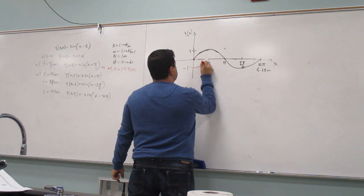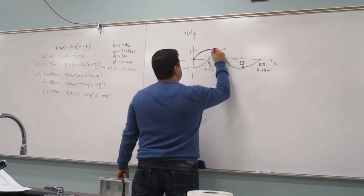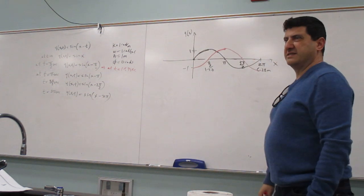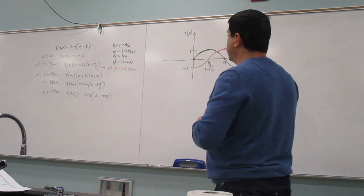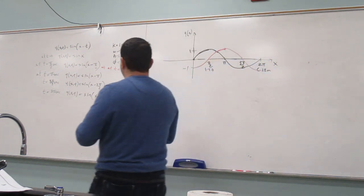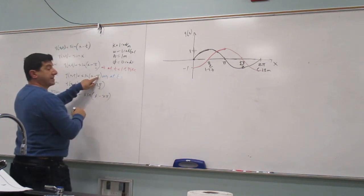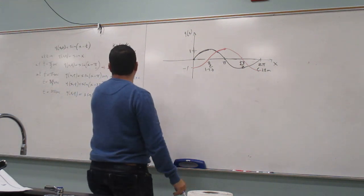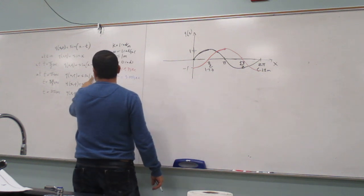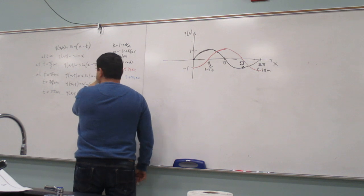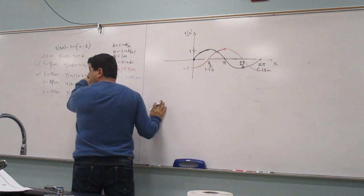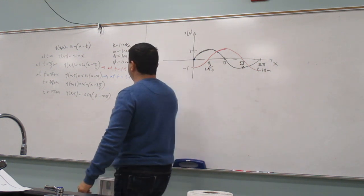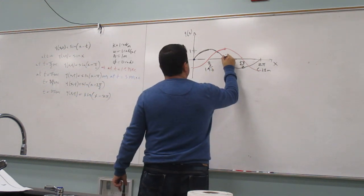The wave is concave up, then concave down. Now at t equals pi seconds — that's 3.14 seconds — when you put x=0 you get sine of negative pi, which is 0. When you put pi over 2, you get sine of negative pi over 2, which is negative 1. Then when you put x=pi, you get 0 again. So the wave looks like this.